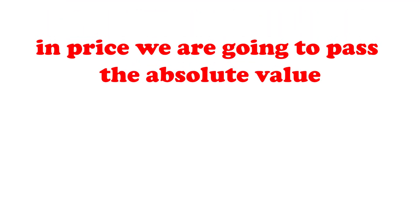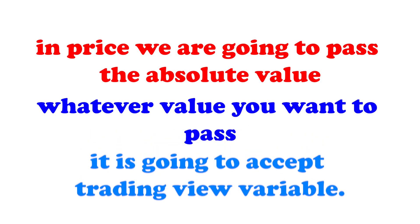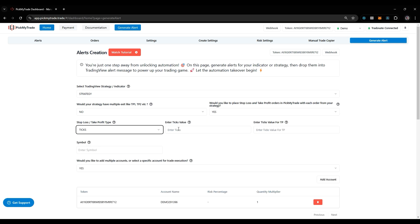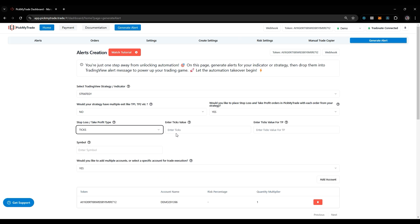The third stop loss type is Price, where you pass an absolute value — it accepts a TradingView variable. The fourth is Ticks: for example, five tick profit and ten tick stop loss. For ticks, it will ask you to select the symbol because every symbol has a different tick value.